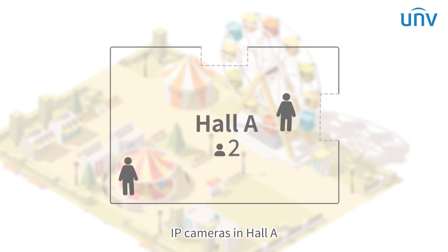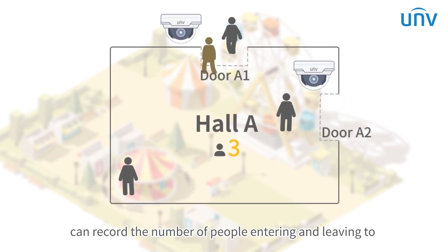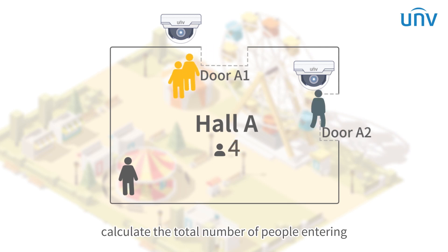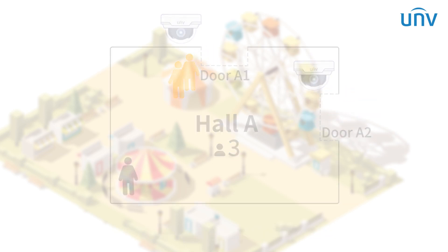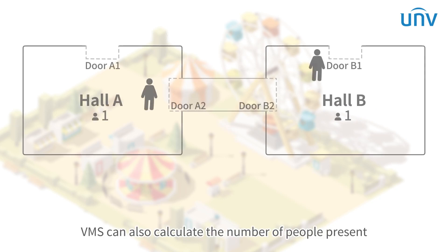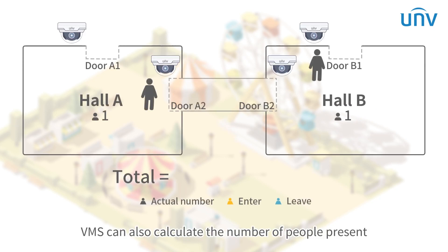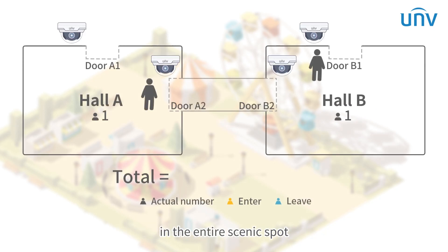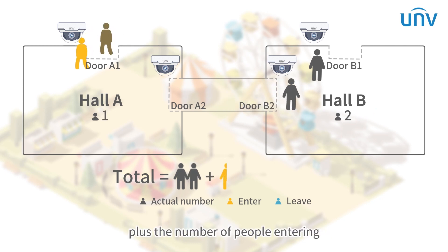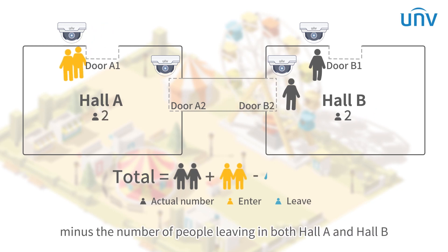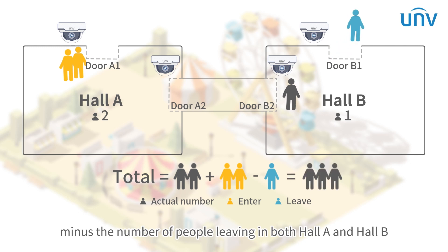IP cameras in Hall A can record the number of people entering and leaving to calculate the total number of people entering, leaving, and present in Hall A. VMS can also calculate the number of people present in the entire scenic spot, based on the current number of people, plus the number of people entering, minus the number of people leaving, in both Hall A and Hall B.